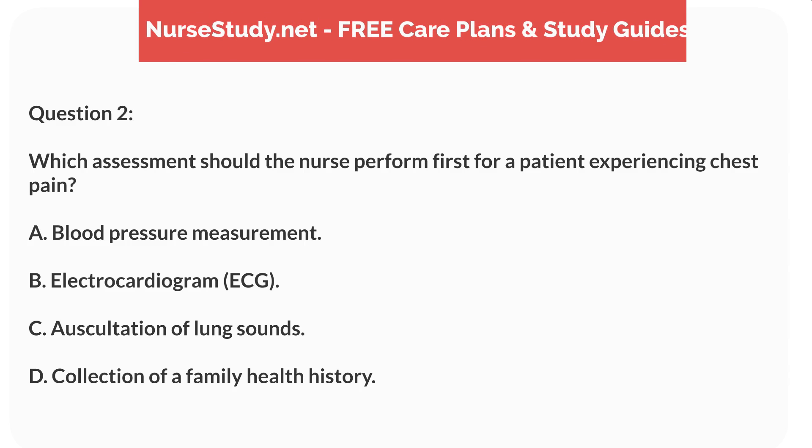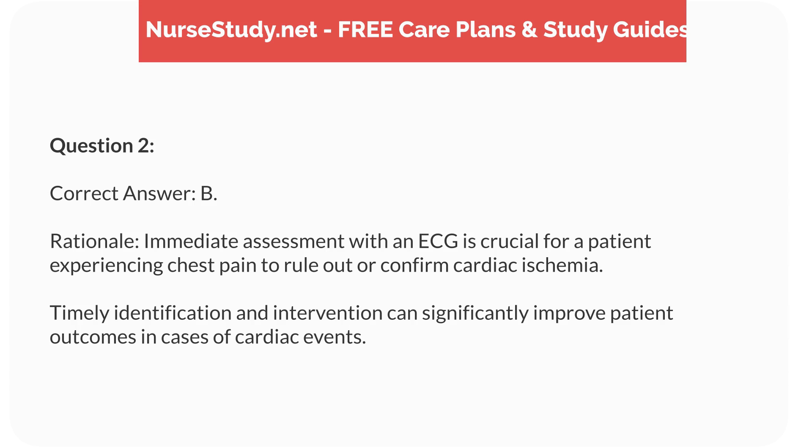Question 2. Which assessment should the nurse perform first for a patient experiencing chest pain? A. Blood pressure measurement. B. Electrocardiogram ECG. C. Auscultation of lung sounds. D. Collection of a family health history. Correct answer: B. Rationale: immediate assessment with an ECG is crucial for a patient experiencing chest pain to rule out or confirm cardiac ischemia. Timely identification and intervention can significantly improve patient outcomes in cases of cardiac events.